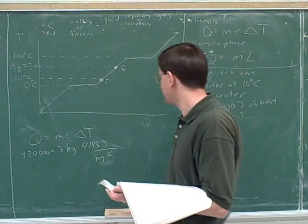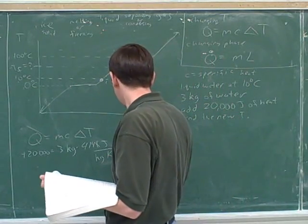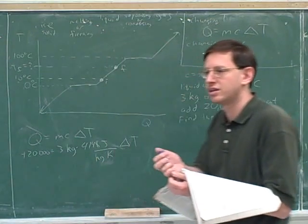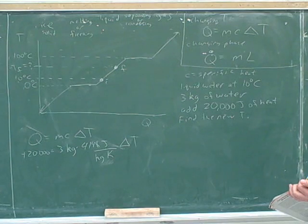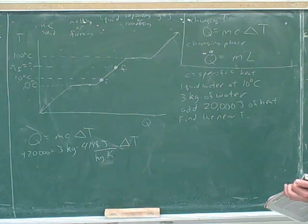And then what should we plug in for delta T? I guess we don't know delta T, do we? So we'll just plug in delta T here. Can I plug in T_50 minus 2 or 3 Kelvin? Or no? Because we're looking for it.